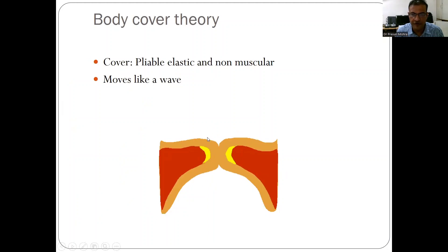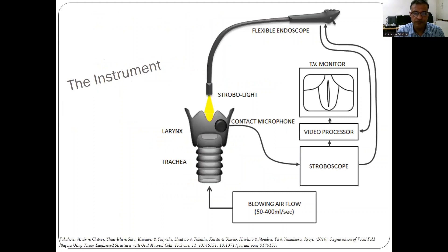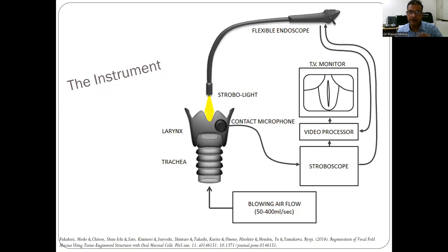There is also the body-cover theory: the epithelium forms the cover of the vocal fold, and the body is formed mainly by the second and third layers of the lamina propria along with the muscle. The epithelium with the first layer of lamina forms the cover, and it is this cover that moves like a wave. To see this phenomenon, we also need a strobe light. The required equipment includes a strobe light delivered through a flexible or rigid endoscope, flickering at a frequency slightly lower than the frequency of the vocal fold movement.